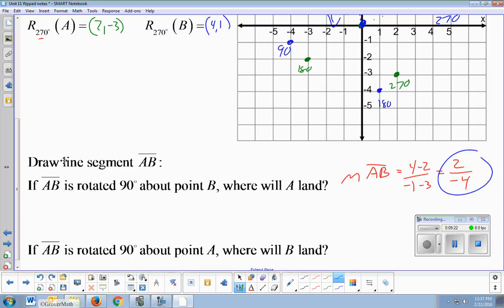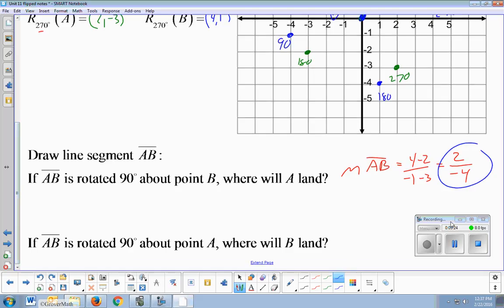The perpendicular slope to that, perpendicular to 2 over negative 4 would be positive 4 over 2. And remember, this is your change in y and your change in x. So what we need to do is change y by 4 and x by 2 for a 90 degree perpendicular rotation.